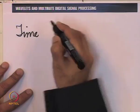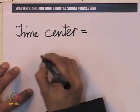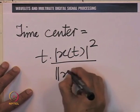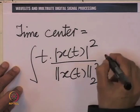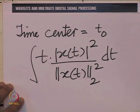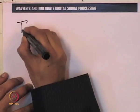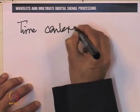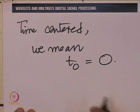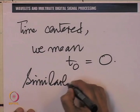When we say time-centered, we mean that the mean of this distribution is 0. The time center in general is the integral of t times mod x(t) squared divided by the norm squared of x(t), integrated over all t, which we call t_0. A function is time-centered when t_0 equals 0. Similarly, we can talk about frequency density and frequency center.